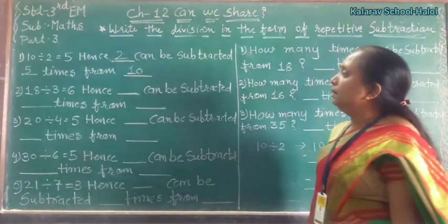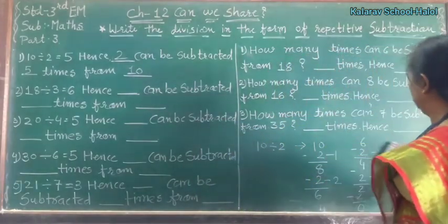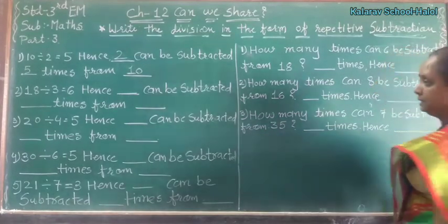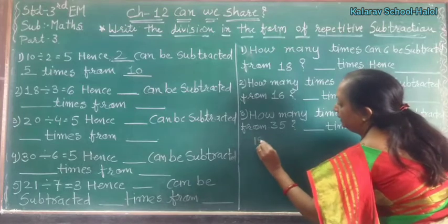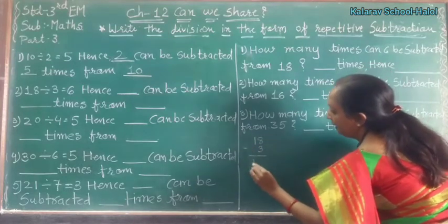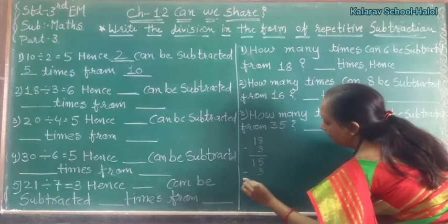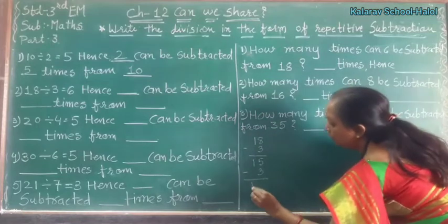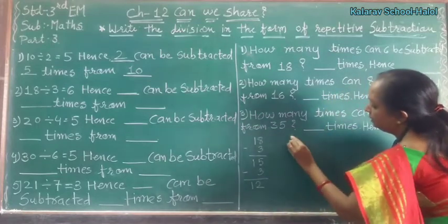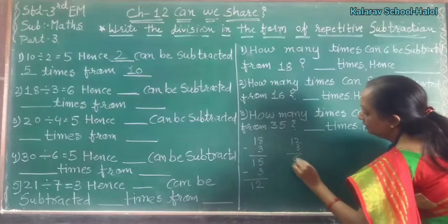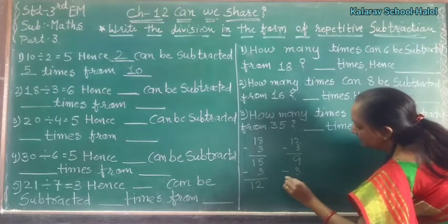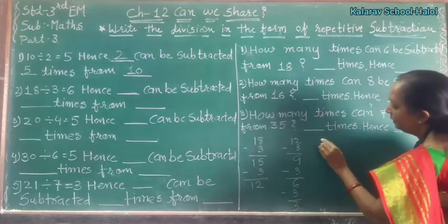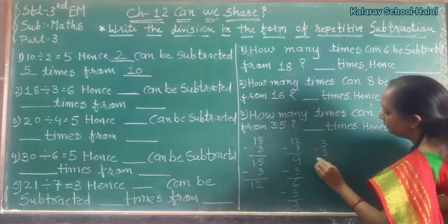Understand? Now, 18 divided by 3. We subtract 3 from 18 repeatedly. 18 minus 3 is 15. 15 minus 3 is 12. Then 12 minus 3 is 9. 9 minus 3 is 6. 6 minus 3 is 3. And 3 minus 3 is 0.